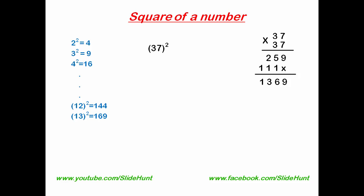To square 37, first we need to find the difference between 37 and the nearest tens number. Tens numbers are multiples of 10 — for example, 10, 20, 30, 40, and so on. The nearest tens number of 37 is 40. The difference between 40 and 37 is 3.